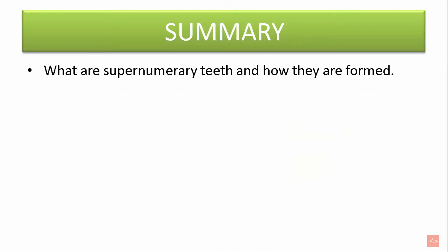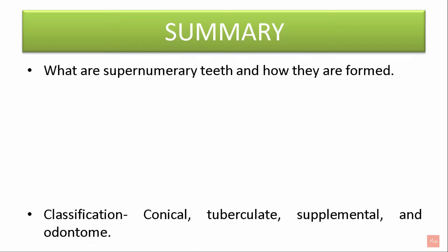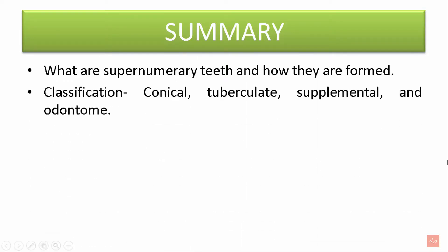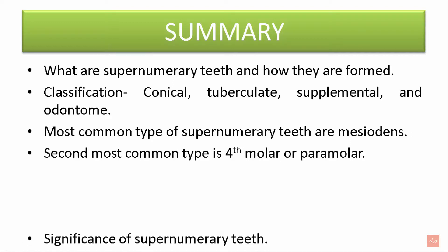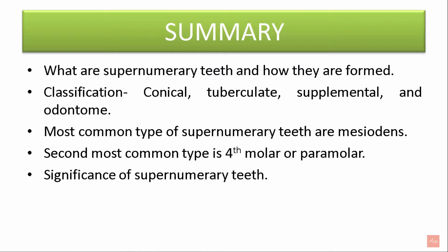Let's summarize what we learnt today. We learnt what supernumerary teeth are and how they are formed. We learnt the classification — there are four types: conical, tuberculate, supplemental, and odontome. The most common type of supernumerary teeth is mesiodens, and the second most common is the fourth molar or paramolar. We also studied the significance, and the treatment is extraction.